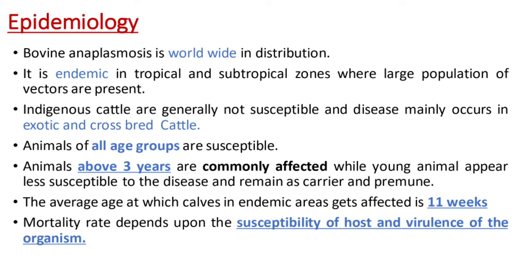Coming to epidemiology, bovine Anaplasmosis is worldwide in distribution. It is endemic in tropical and subtropical zones where large populations of vectors are present. Indigenous cattle are generally not susceptible and disease mainly occurs in exotic and crossbred cattle. Animals of all age groups are susceptible; however, animals above three years are commonly affected, while young animals appear less susceptible and remain as carriers. The average age at which calves in endemic areas get affected is 11 weeks, while mortality rate depends upon the susceptibility of the host and virulence of the organism.